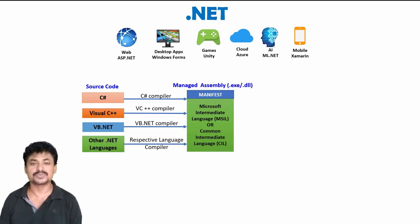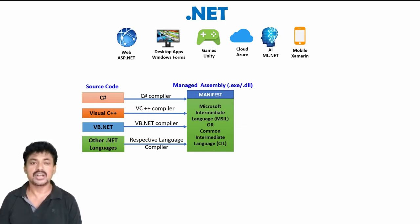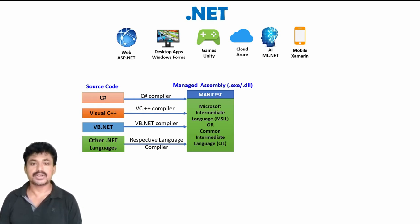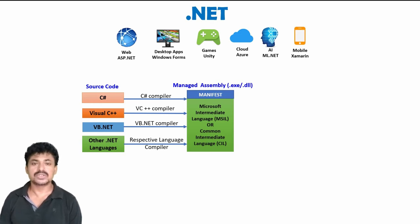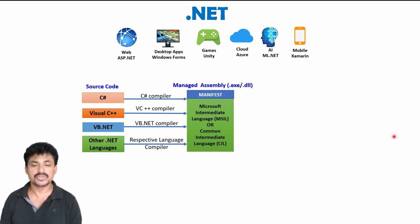The C# compiler cannot convert directly into machine code. The managed assembly is in the form of a .exe or .dll file. The managed assembly contains a manifest and some Microsoft Intermediate Language (MSIL) code. We can read this assembly and also export it using the ildasm tool.